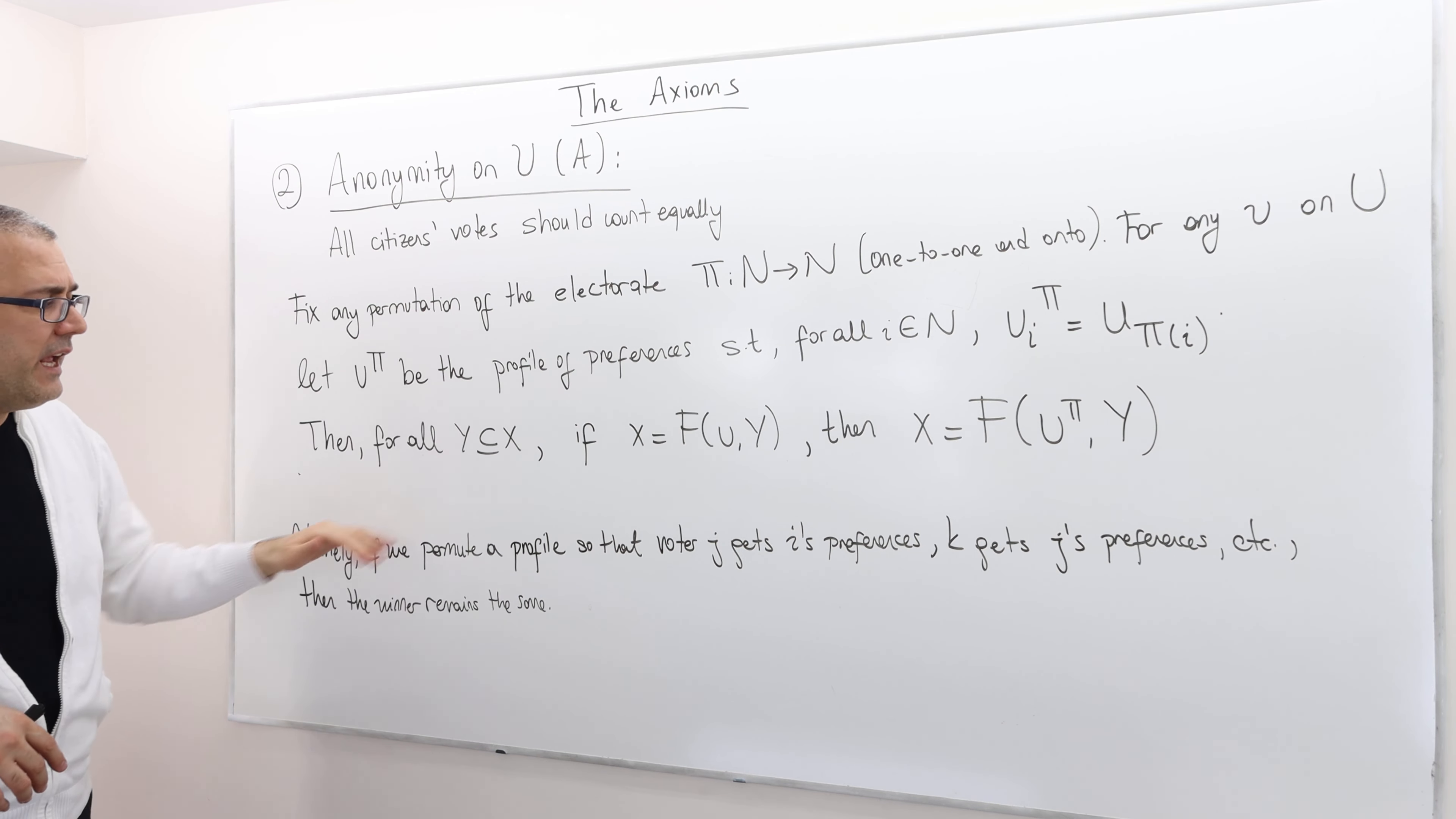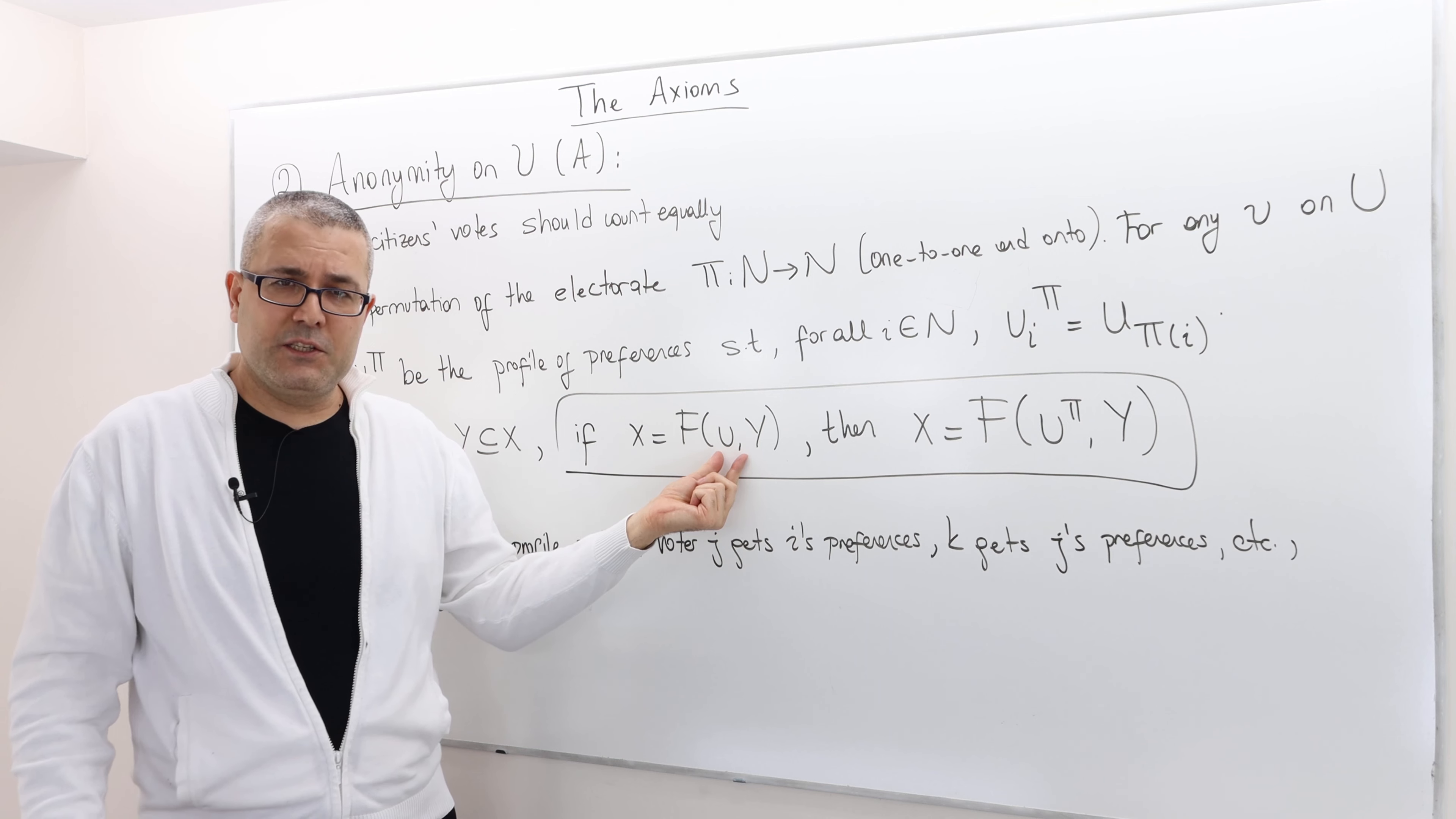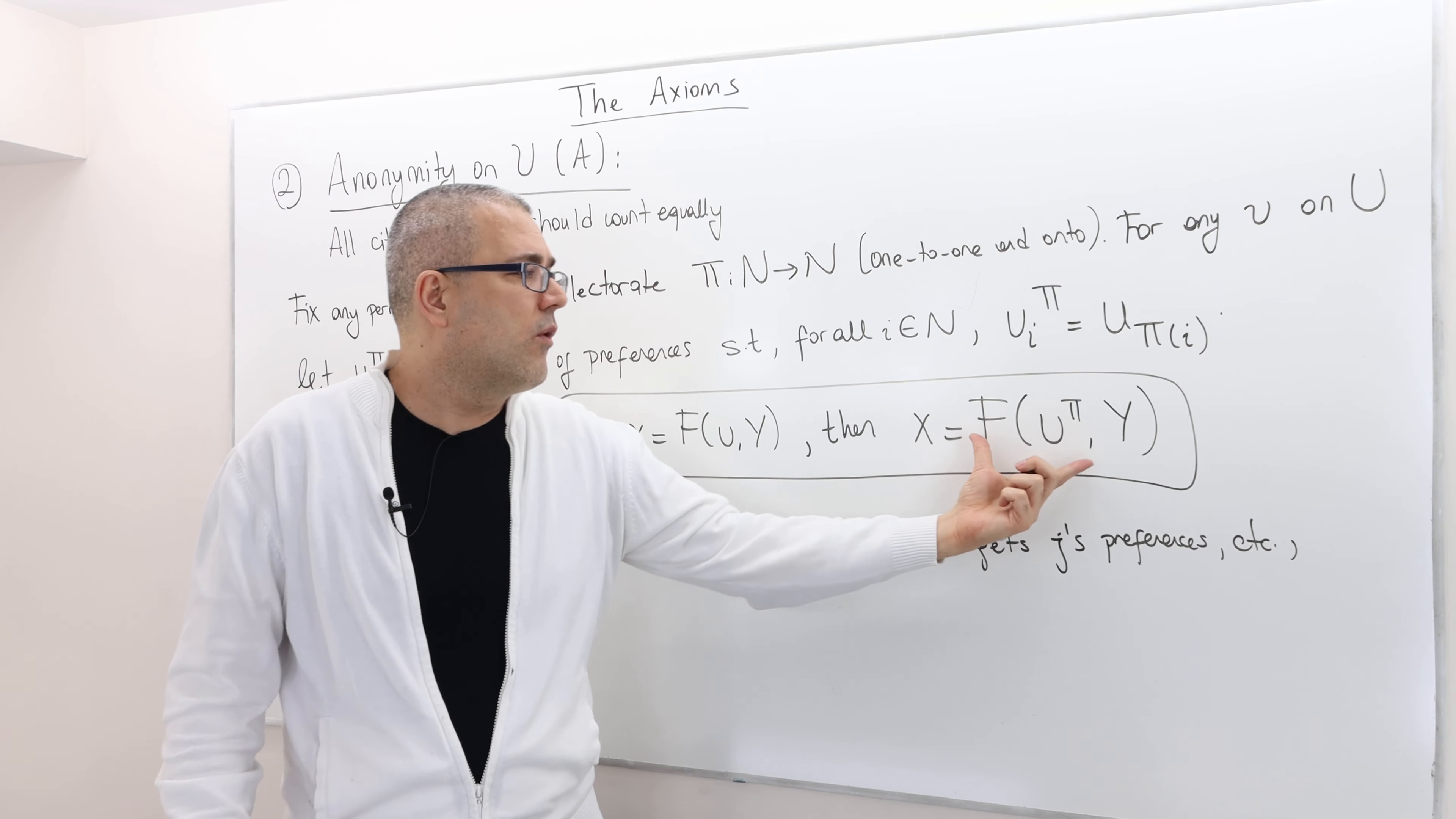Well, then for any subset Y of X, if, so that part is the key, if the voting rule chooses alternative x under this profile u and within the set Y, well, then once we permute the preference profile u by this pi,